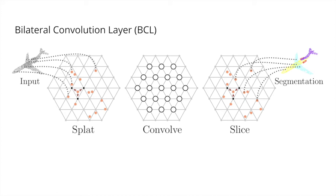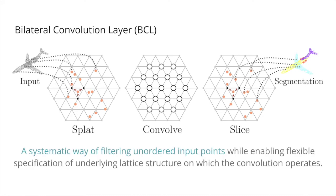The resulting signal can be passed onto other BCLs for further processing. In summary, BCL smoothly maps given input points onto a sparse lattice, performs standard convolutions on the sparse lattice, and then smoothly interpolates the filtered signal back onto the original input points. It provides a systematic way of filtering on arbitrary input points while enabling flexible specification of the underlying lattice structure.